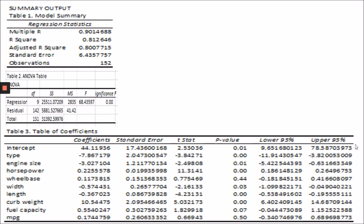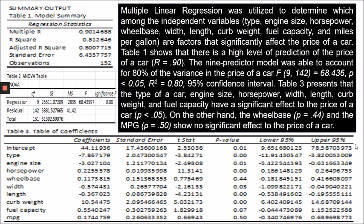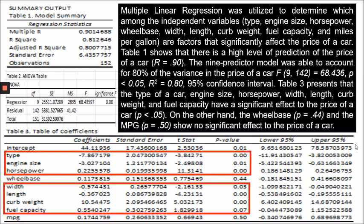To summarize the interpretation of all three tables, we can write: 'Multiple linear regression was utilized to determine which among the independent variables significantly affect the price of the car. Table 1 shows that there is a high level of prediction of the price of the car; the nine-predictor model accounted for 80% of the variance. Table 3 presents that type of car, engine size, horsepower, width, length, curb weight, and fuel capacity have a significant effect on the price of the car, while wheelbase and MPG show no significant effect.' That's it, and thank you for watching.